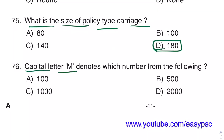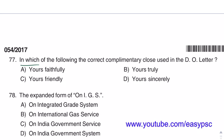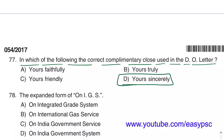Capital letter M denotes the number 1,000. The correct complimentary clause used in a DO letter is 'Yours sincerely'.